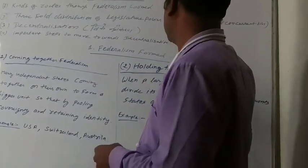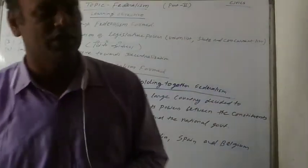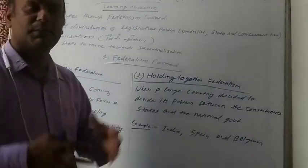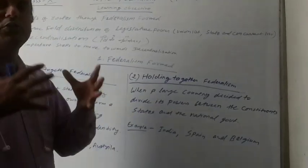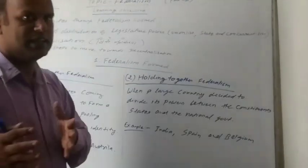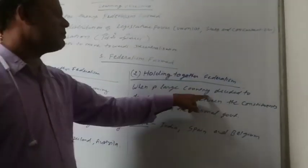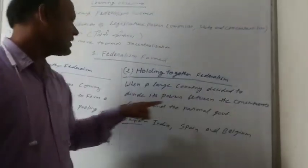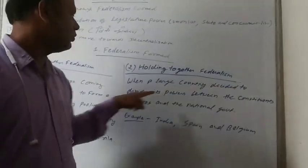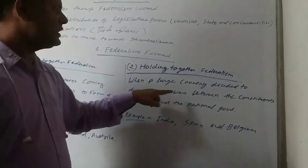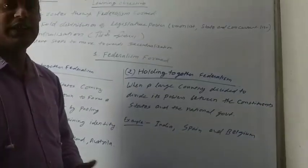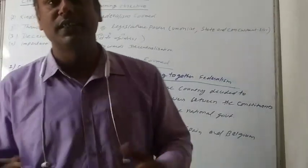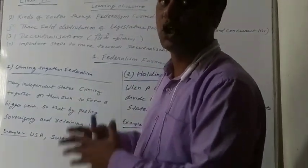The second type is called holding together federation. Holding together federation means that you divide power between the state government as well as the central government. When a large country decides to divide power between its constituent states and the national government, it is called holding together federation. The examples of holding together federation are India, Spain, and Belgium. In most of the world's democratic structures, most countries adopt holding together federations.